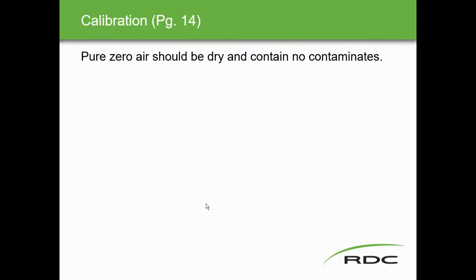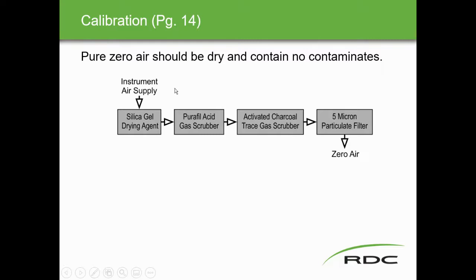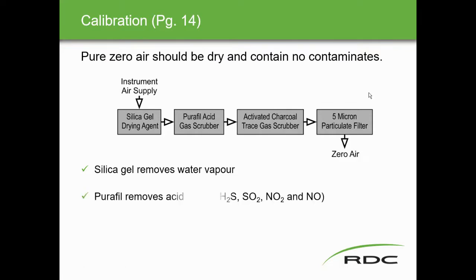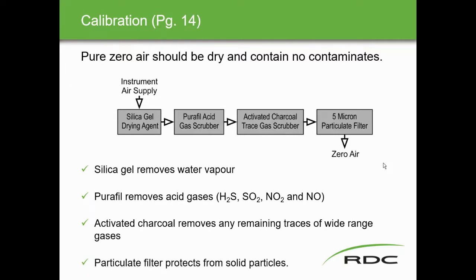For calibration, pure zero air must be dry and contain no contaminants. The zero air preparation system includes: silica gel (removes water vapor), Purafil acid gas scrubber (removes H2S, SO2, NO2, NO), activated charcoal trace gas scrubber (removes wide-range trace gases), and a 5-micron particulate filter. This level of purity is required because the chemiluminescence analyzer is measuring at parts per billion.